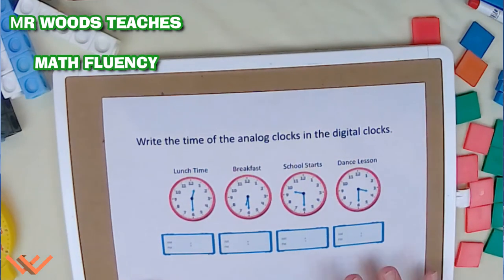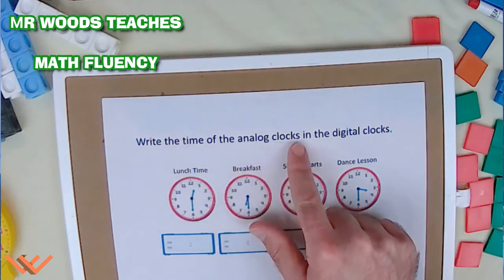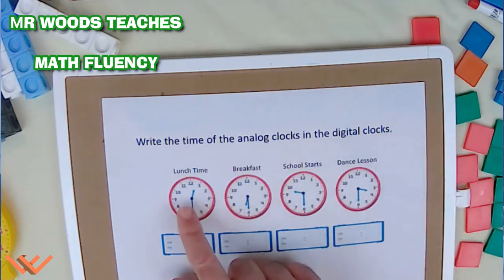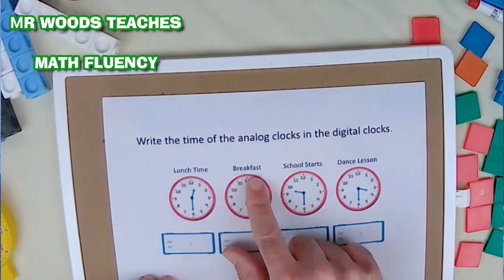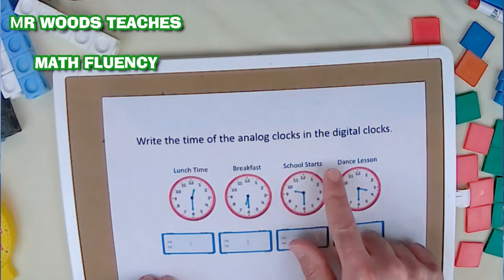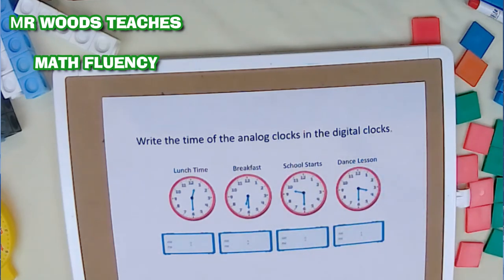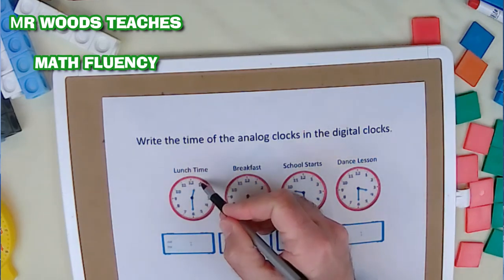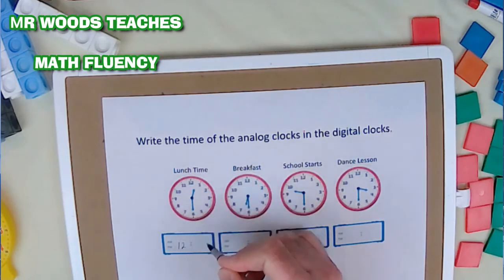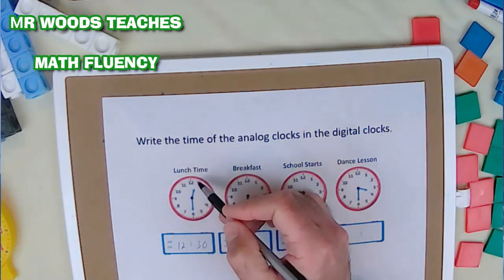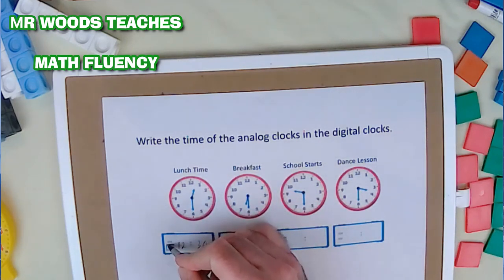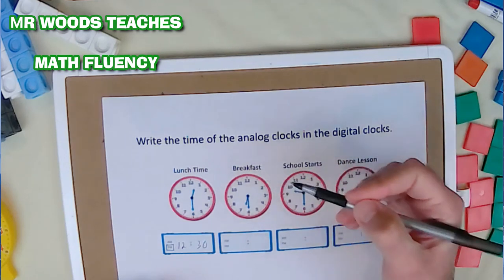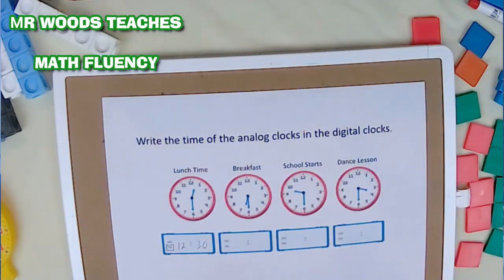Again, it says, write the time of the analog clocks in the digital clocks. So we have the same analog clocks, but we have different words here. Lunchtime, breakfast, school starts, dance lesson. So let's go back here again between the 12 and the 1. So I know it's going to be 12. And then it's 30. But it says, lunchtime. Lunchtime is going to be afternoon. That's my clue. Breakfast. Breakfast is usually in the morning. That's my clue.